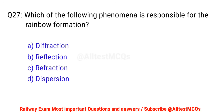Q27. Which of the following phenomena is responsible for rainbow formation? Right option is D. Dispersion.